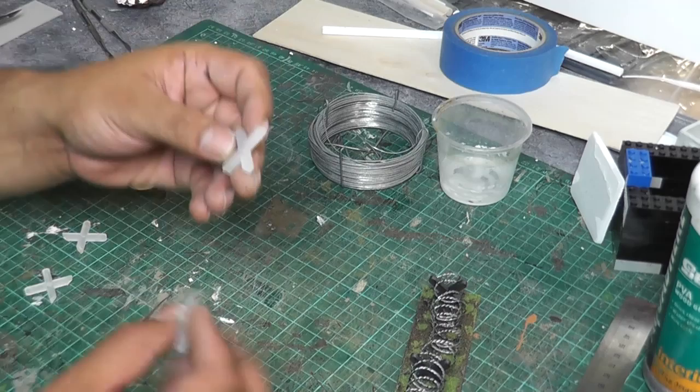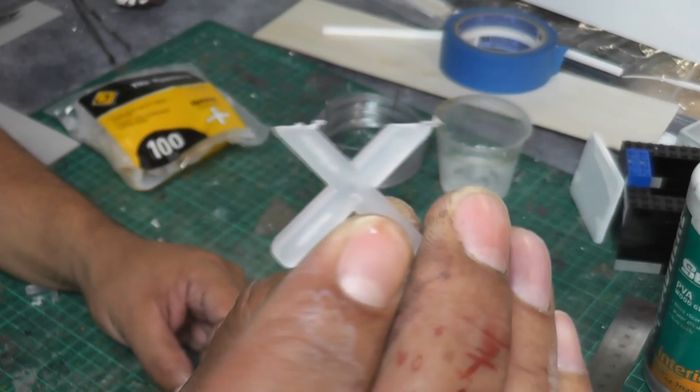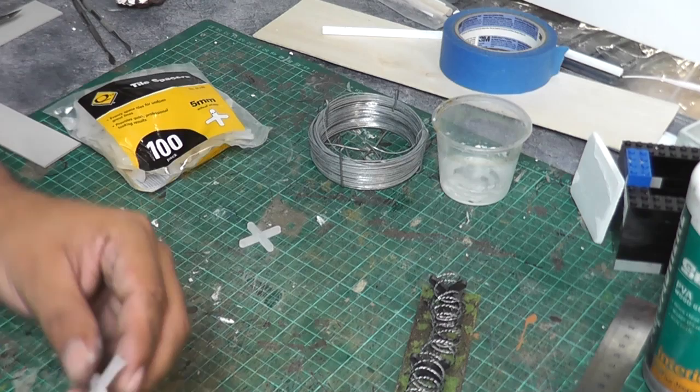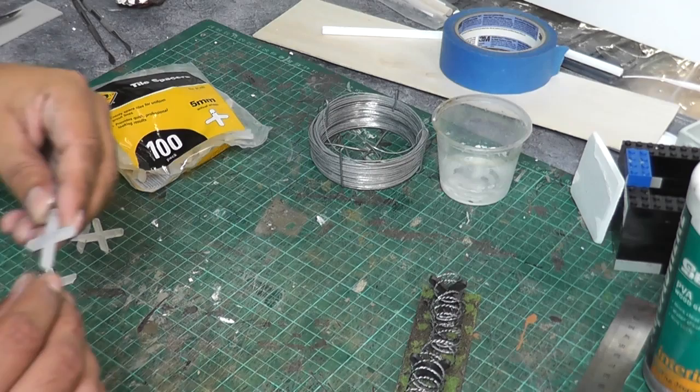All we're doing is taking those, sanding one edge flat on a piece of sandpaper. I've used a belt sander because it's faster so I've already done that. Just rub this on some sandpaper and flatten the ends.